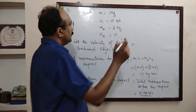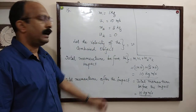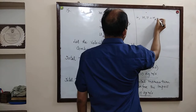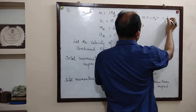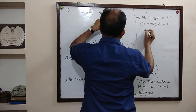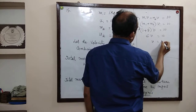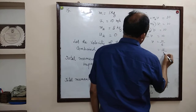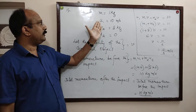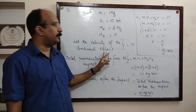Now we are also asked to find V. The total momentum after the impact can also be calculated using the formula M1×V + M2×V, which equals (M1 + M2)×V. We know this equals 10, so (1 + 5)×V = 10, that is 6V = 10, so V = 10/6 = 5/3 m/s. Since both bodies combined together after collision, the combined velocity is taken as V.